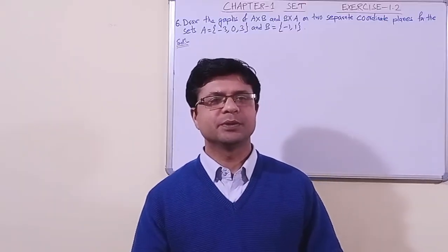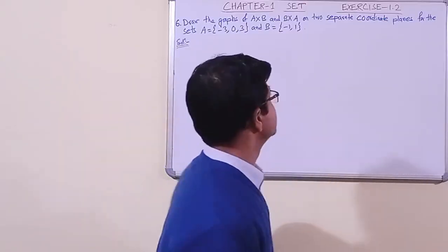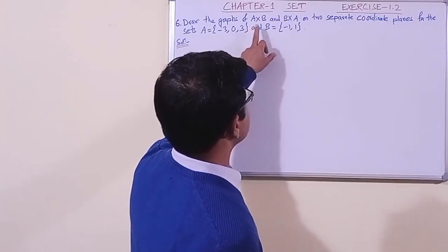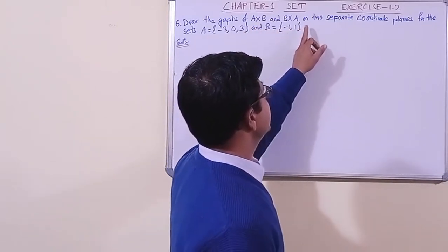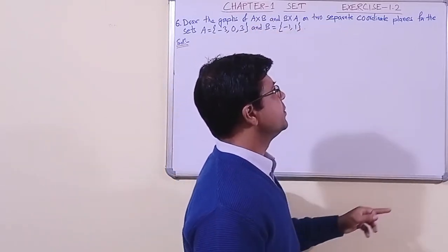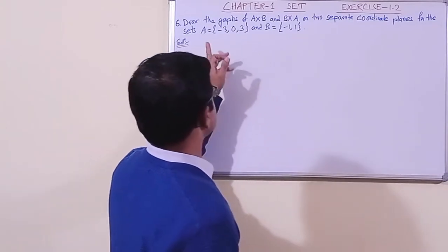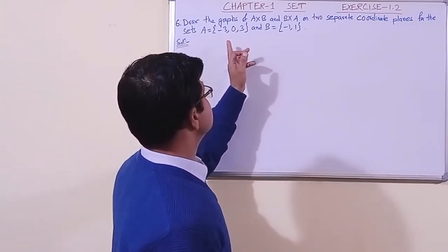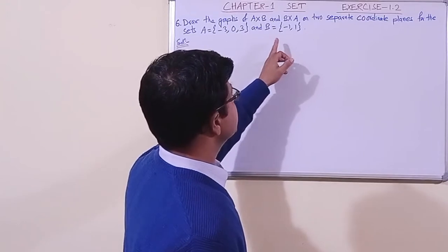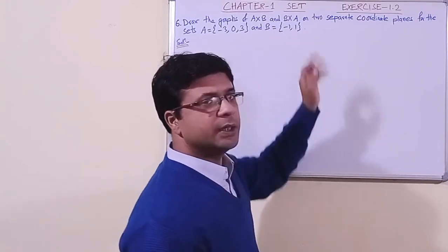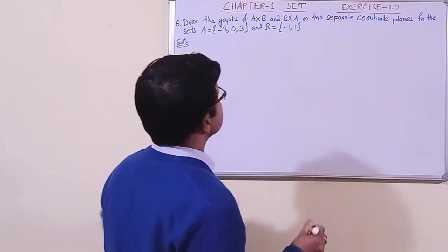Today we have taken question number 6. The question is: draw the graph of A cross B and B cross A on two separate coordinate planes, for the sets A whose elements are minus 3, 0, 3 and B is a set whose elements are minus 1 and 1.